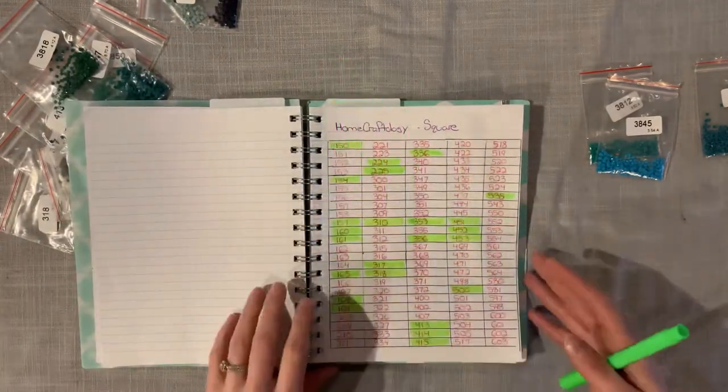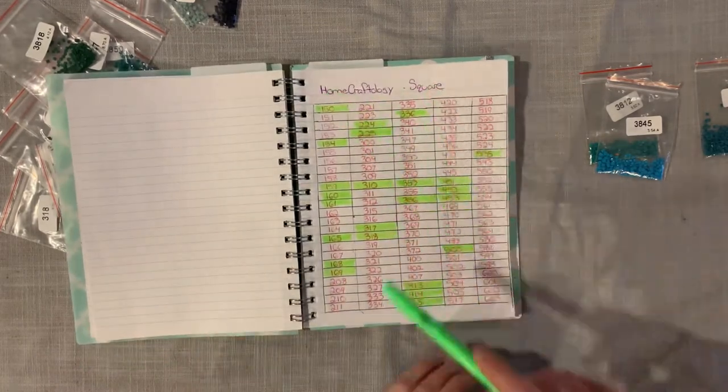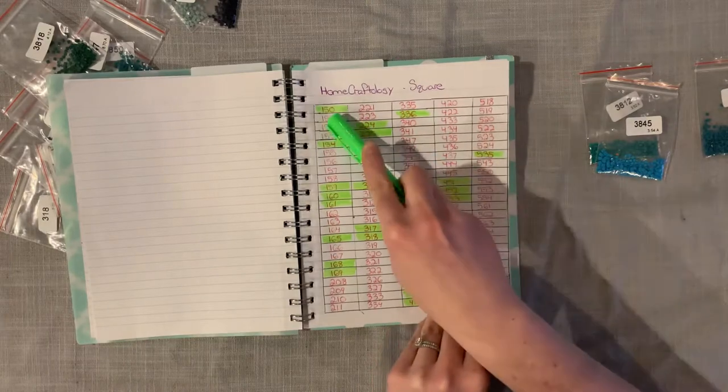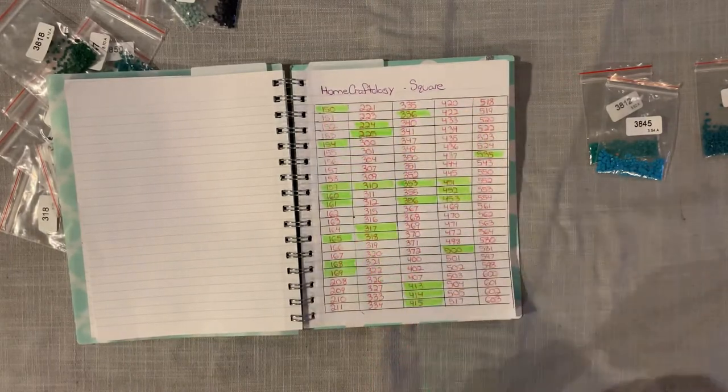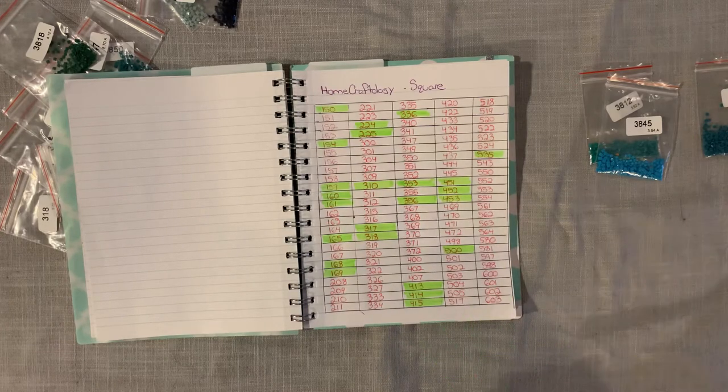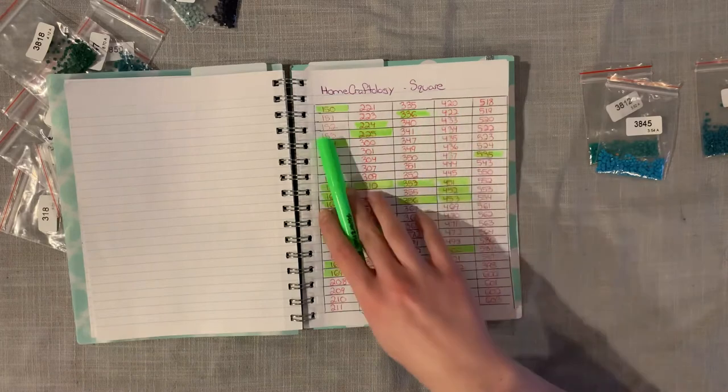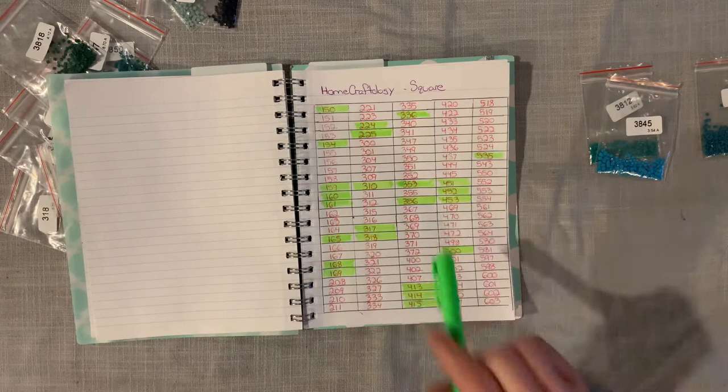So what I've done in a notebook here is just keep track of, so this is Home Craftology and whether it's square and these are all of the different DMC numbers. I have a chart that I used from a Facebook group that I'm in that lists out all of the numbers and I just wrote them all out in pen going down. And then when I have it, I highlight it.